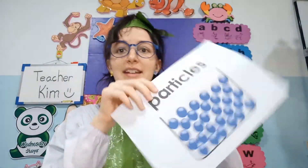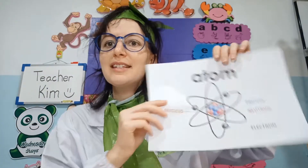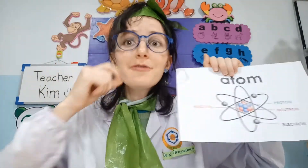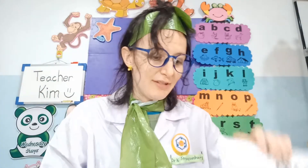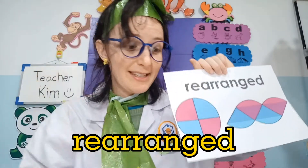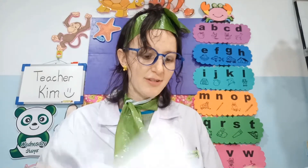Remember, everything around us is made of particles. And we can break particles even smaller into the smallest bit, which is called an atom. When we move the atoms around, we rearrange them. If we rearrange the atoms, we move them around, we get a new substance — it is not the same. And this is when we have a chemical change.